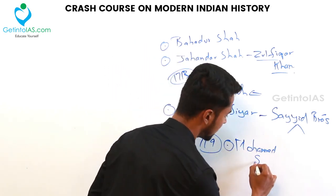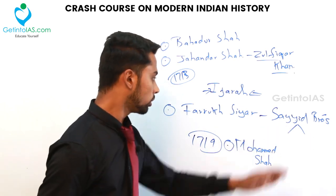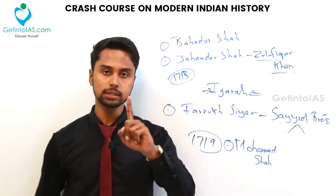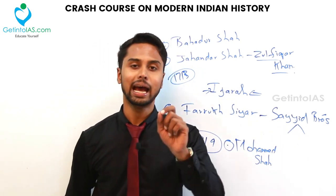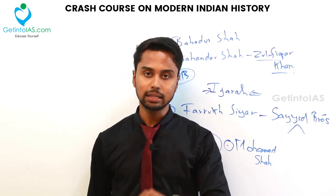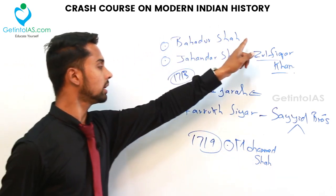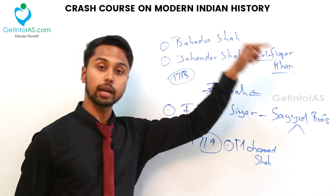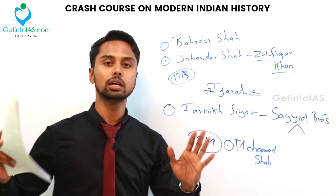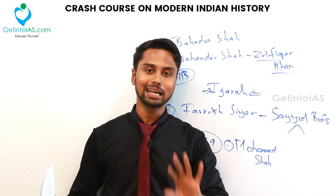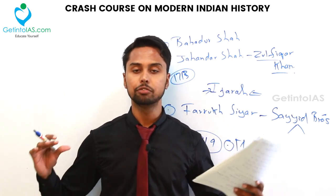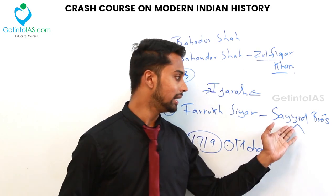Muhammad Shah was then made ruler by the Sayyid brothers. Two important things were done by the Sayyid brothers: one, Jizya (the tax on non-Muslims) was abolished; and two, Pilgrim tax was also abolished. With respect to the Marathas, unlike before, the Sayyid brothers gave the Marathas the right to collect tax directly from the people without any condition. In return, the Marathas would provide a battalion of 15,000 soldiers to protect Mughal territories in the Deccan.